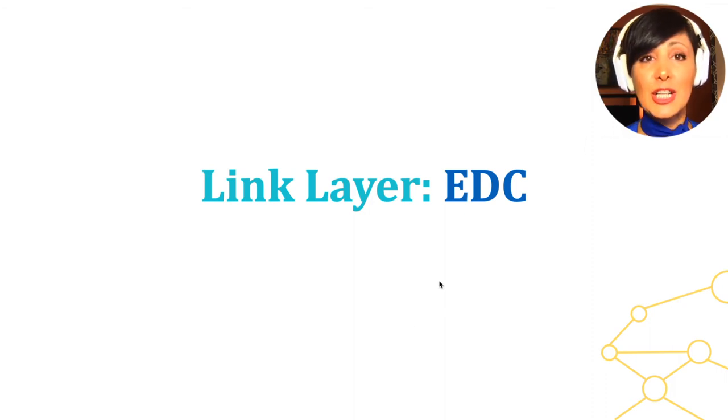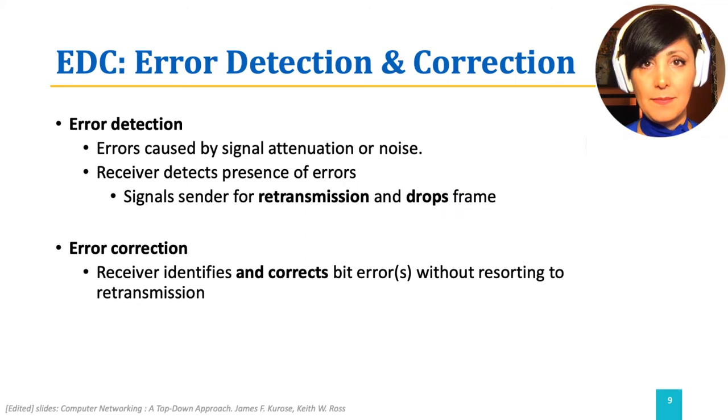Bit-level error detection and correction is necessary because errors caused by signal attenuation or noise may change the bit values within a frame. The link layer does not want to deliver a datagram to the network layer to proceed with its end-to-end delivery if it's already known to have problems.